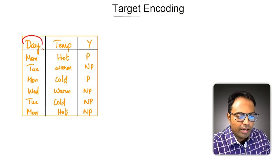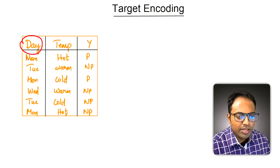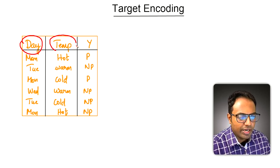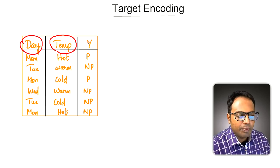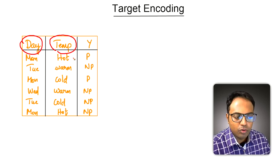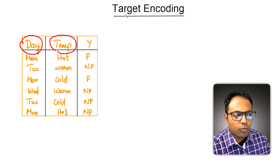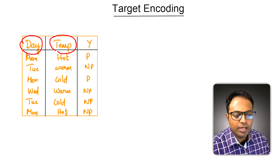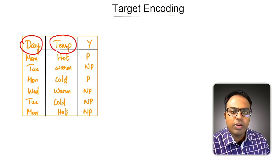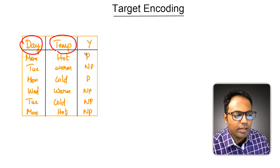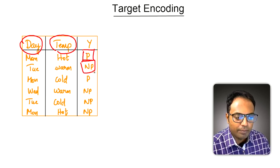What is special about target encoding is we are going to convert categorical data. We have a dataset which represents days of the week and temperature data — whether it's hot, warm, or cold — and whether the kids played on those combinations of day and temperature. Target encoding will convert these columns into numeric form such that the numbers represent the probability that the children are going to play or not play.